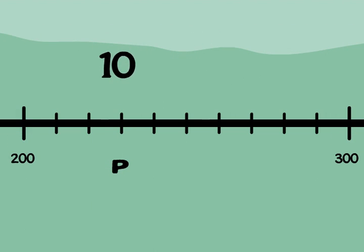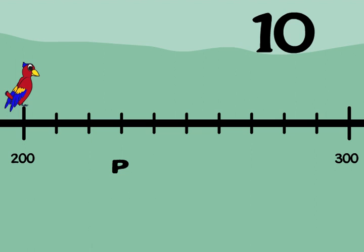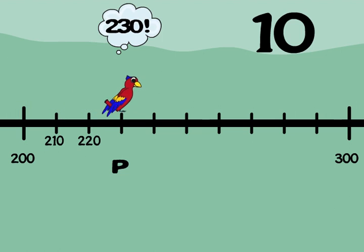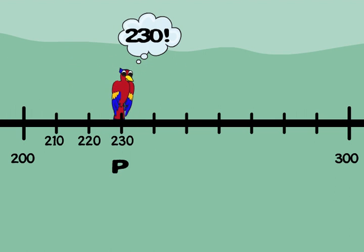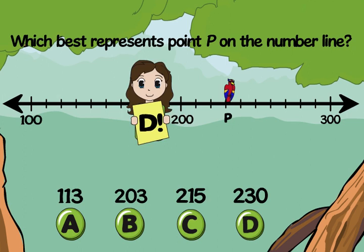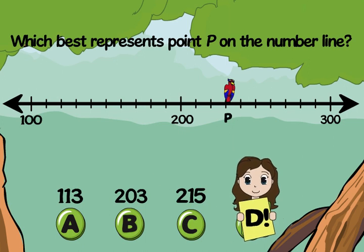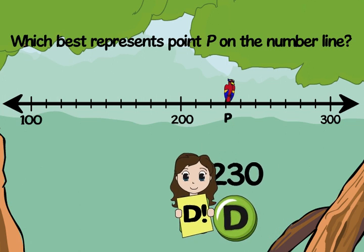Step 3: Now let's skip count by 10 to label the marks: 210, 220, 230. It looks like point P is at 230. So the best answer is D, 230. Each mark is 10, not 1.